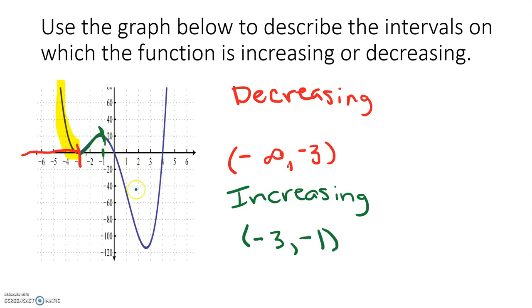Now from negative 1 up until this point, it is decreasing again. And I want to know where that point occurs on the x axis. So it is decreasing from negative 1 to positive 2.5. And then it begins increasing again from 2.5 to infinity.